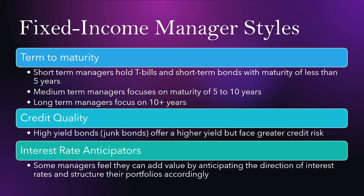Fixed income managers may also focus on credit quality. There are high-yield bonds or junk bonds that yield a higher return but face greater credit risk. There are also interest rate anticipators — managers who feel they can add value by anticipating the direction of interest rates and structuring their portfolios accordingly. For example, if the manager thinks interest rates are going to increase, bond prices will decrease, so they'll want to get out of long-term bonds and buy short-term bonds. When the short-term bonds expire, they can buy longer-term bonds at a lower price.